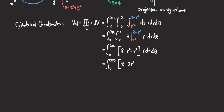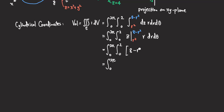Distributing the r, we get 8r minus 2r cubed. So the integral becomes the integral from 0 to 2π dθ times the integral from 0 to 2 of (8r minus 2r cubed) dr.